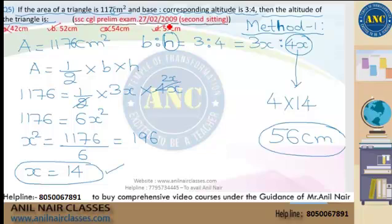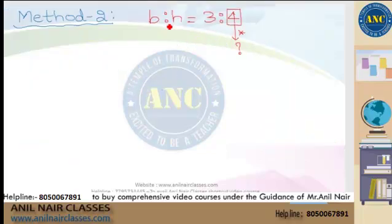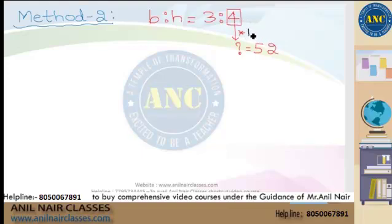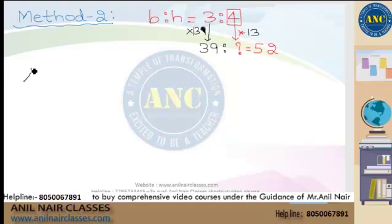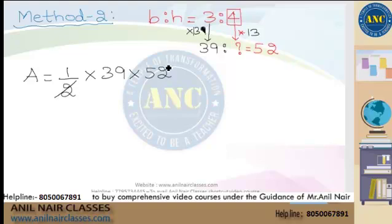There are two possible options: 52 or 56. Suppose I assume 52 is the correct answer. Then 4 into 13 = 52, so the multiplying factor is 13. Base = 3 into 13 = 39. Height = 52. Area of triangle = half into 39 into 52 = 39 into 26.